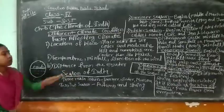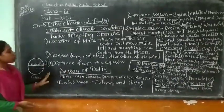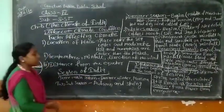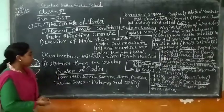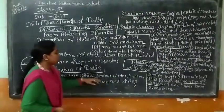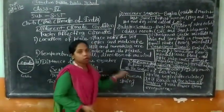So we are going to talk about distance from the equator. Now we have the seasons of India. In India, there are 3 seasons. These are summer, winter, and monsoon.